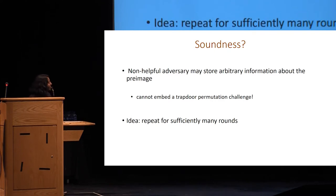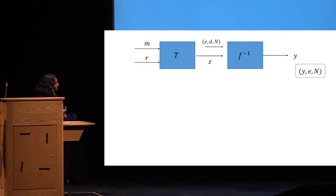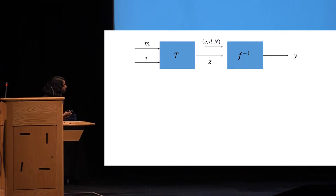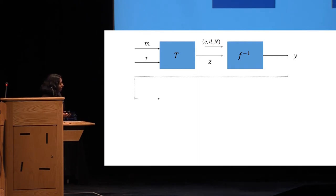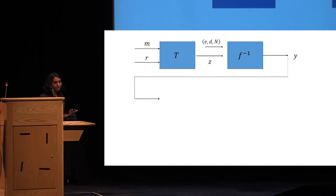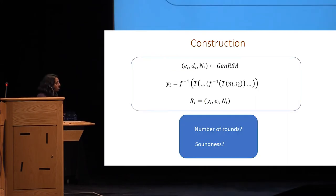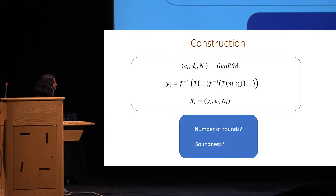The key idea towards our final construction is to repeat the initial idea sufficiently many times. Instead of outputting Y after one round, we take Y and apply T and F-inverse again, doing this for R number of rounds. After R rounds, we output Y and the public key of the trapdoor permutation as the replica encoding. So to construct a replica, we sample keys of a trapdoor permutation and then apply F-inverse and T iteratively to obtain the replica encoding.